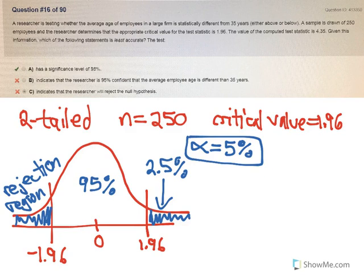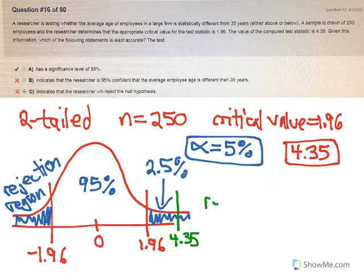Then they say the value of the computed test statistic is 4.35. So that's the value that we are going to calculate, or they did calculate, using Z equals X bar minus mu over sigma, whatever. However, that's the value we got, and that value we compare with our critical value, which is the 1.96. 4.35 clearly falls way to the right of 1.96, so 4.35, which is clearly in the tail, so we are going to reject the null.